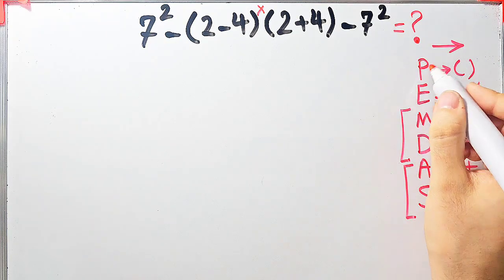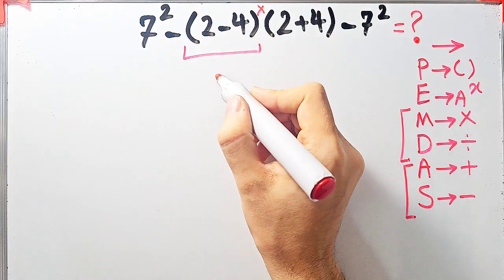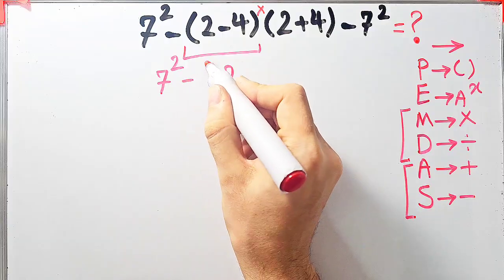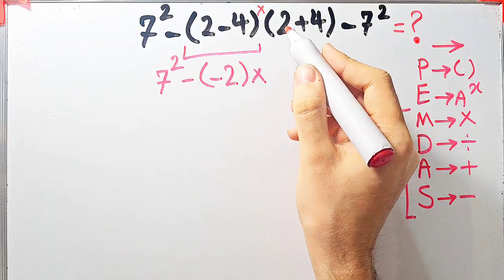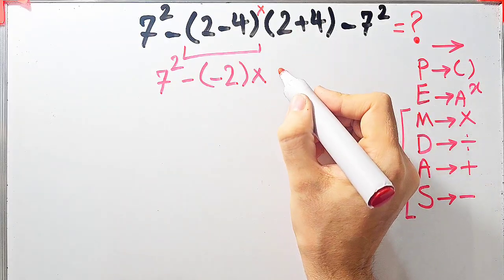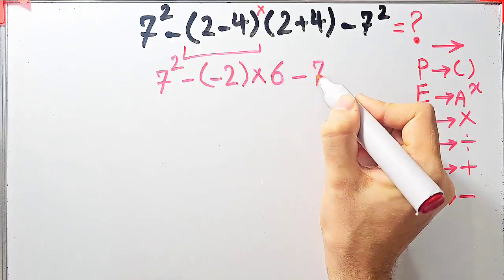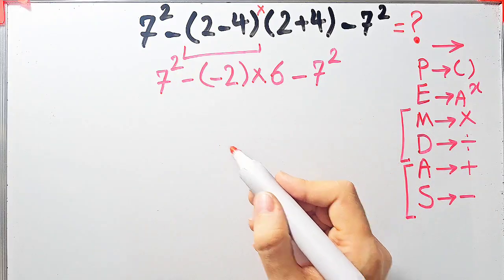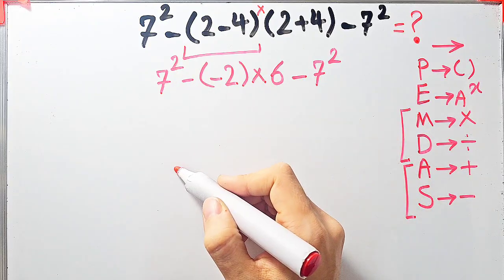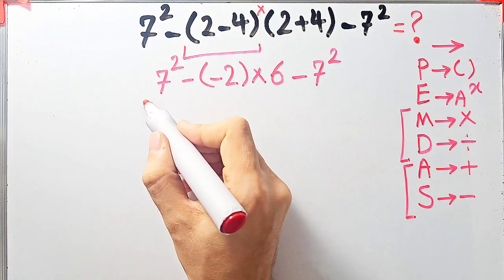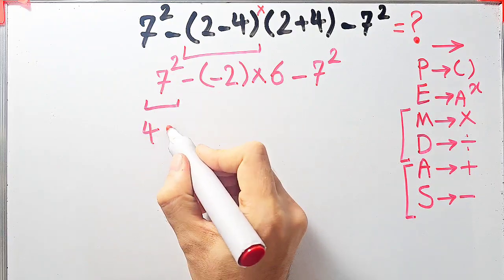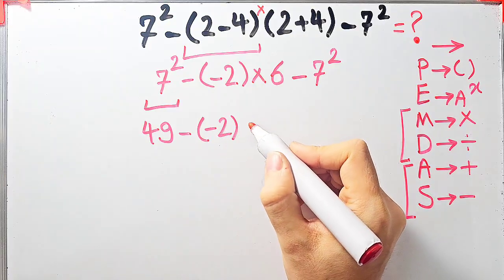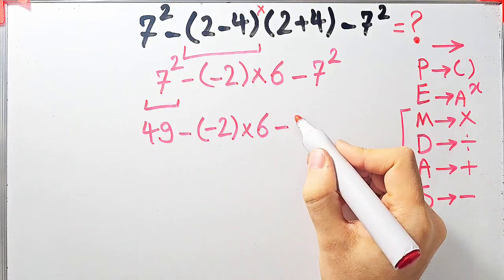According to the PEMDAS rule, first we simplify the parentheses: 2 minus 4 equals negative 2. Now the question is 7 to the power of 2 minus negative 2, then times 6, then minus 7 to the power of 2. We have exponents, subtraction, and multiplication. We simplify the exponent: 7 to the power of 2 equals 49. Now the question is 49 minus negative 2, then times 6, then minus 49.